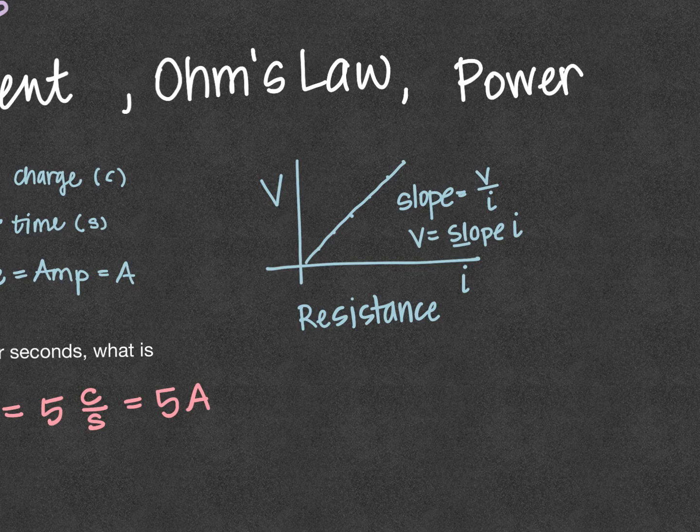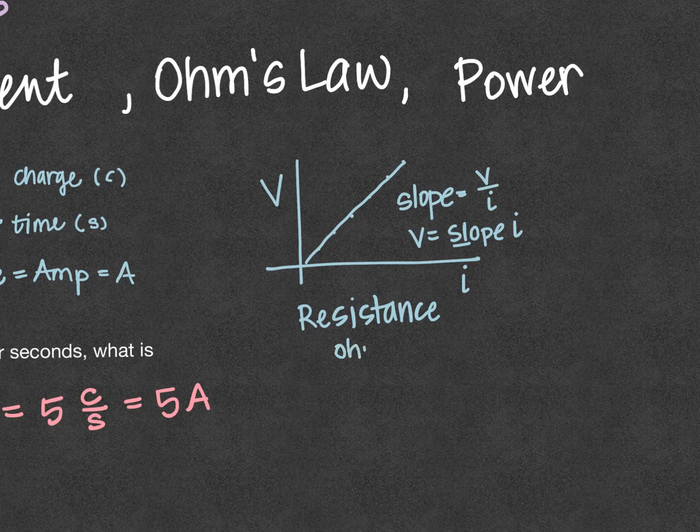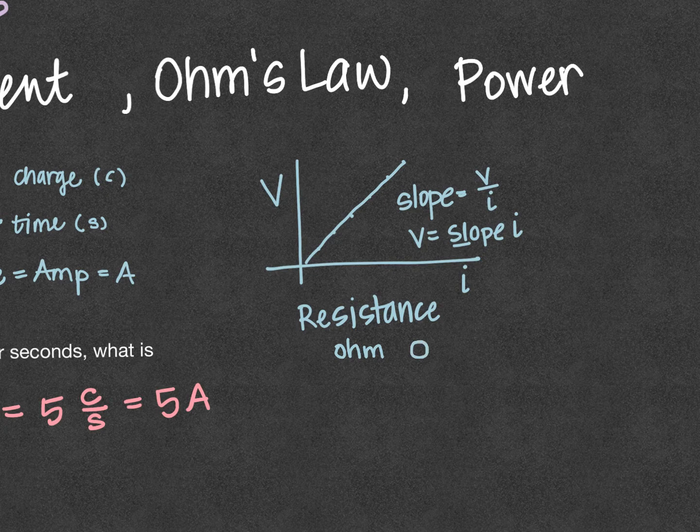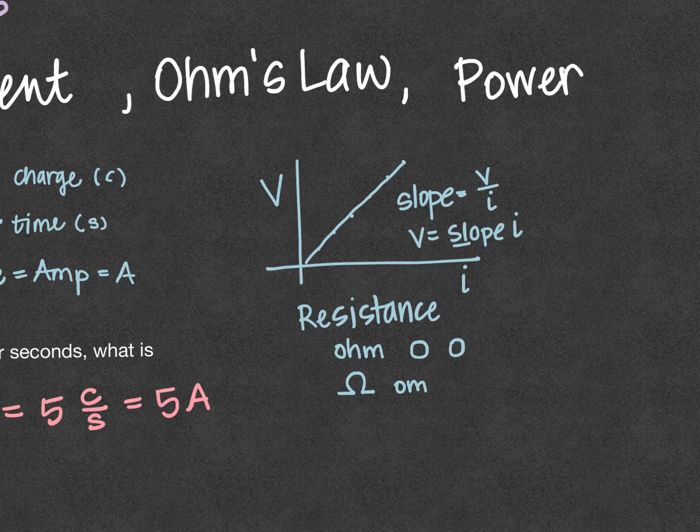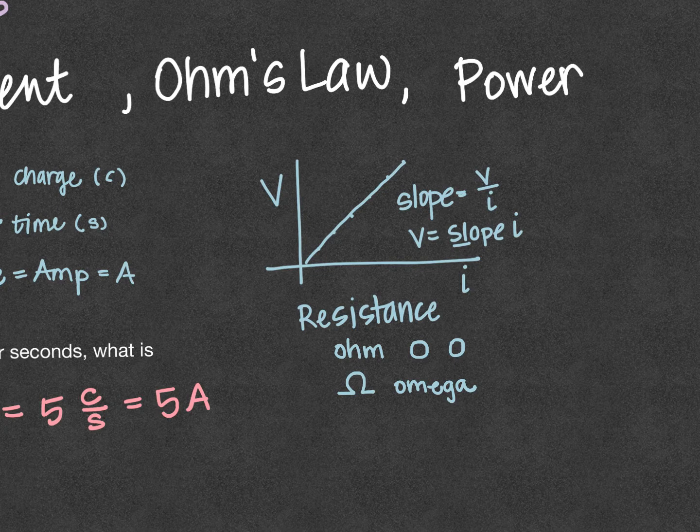So if we write Ohm, the unit for resistance, if we abbreviated it with an O, it looks like a zero. So we don't use an O or a zero. We use an omega. This is a Greek letter that we use as a symbol for the unit Ohm, and Ohm is the unit for resistance.